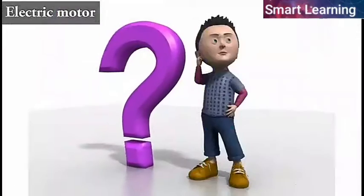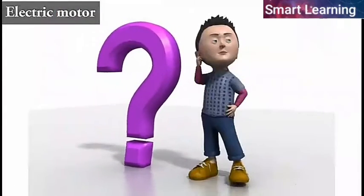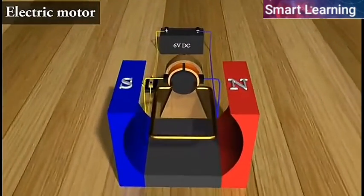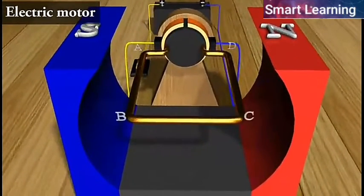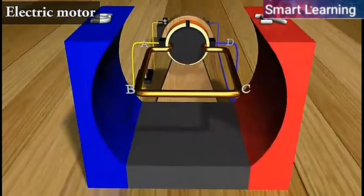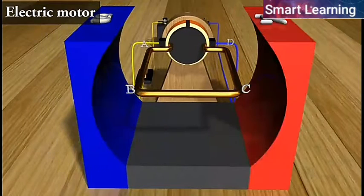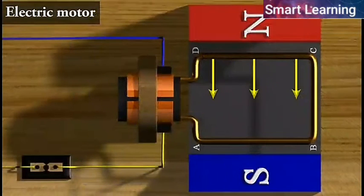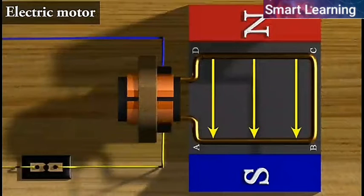Do you know how an electric motor works? An electric motor, as shown here, consists of a rectangular coil ABCD of insulated copper wire. The coil is placed between the two poles of a magnetic field such that the arms AB and CD are perpendicular to the direction of the magnetic field.